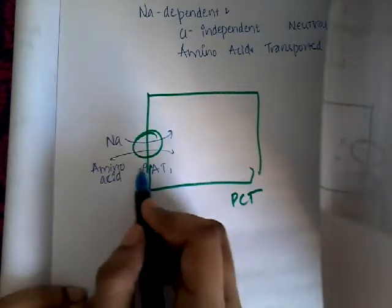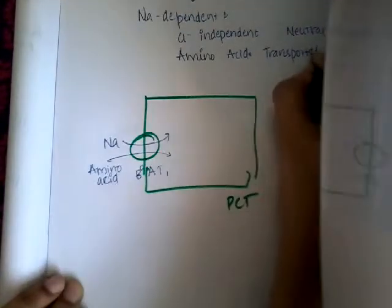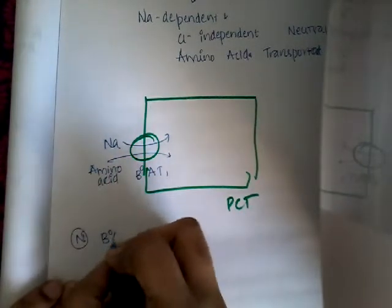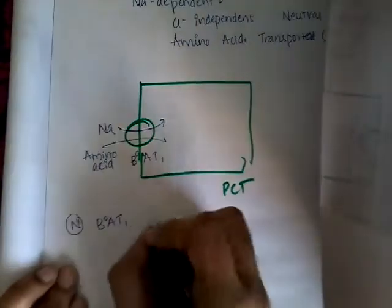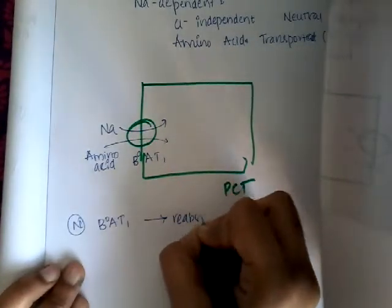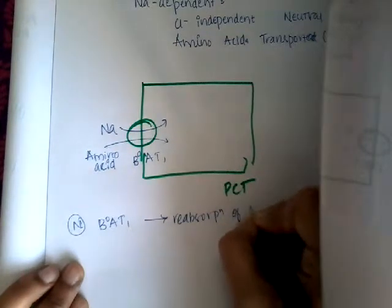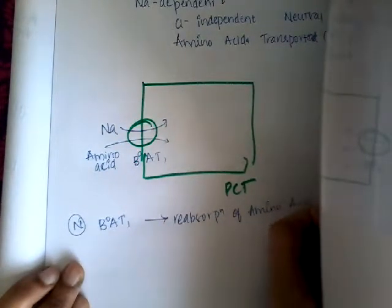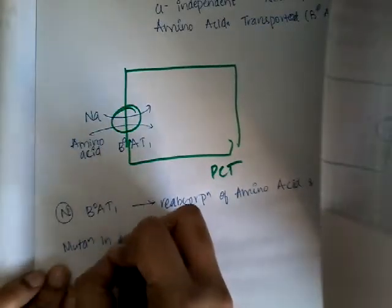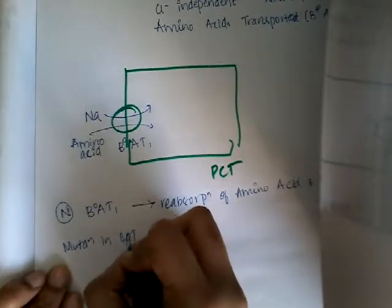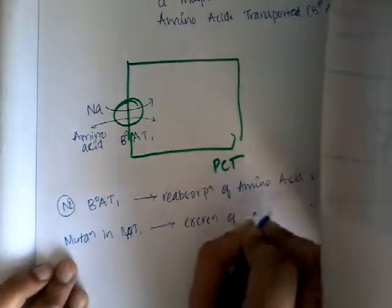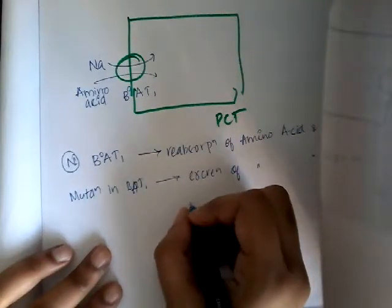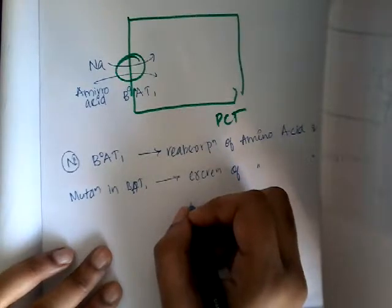This transporter is sodium-dependent and chloride-independent. Normally, this neutral amino acid transporter leads to the reabsorption of neutral amino acids and sodium. But whenever there is a mutation in this protein, there is excretion of amino acids and sodium, which causes several manifestations.